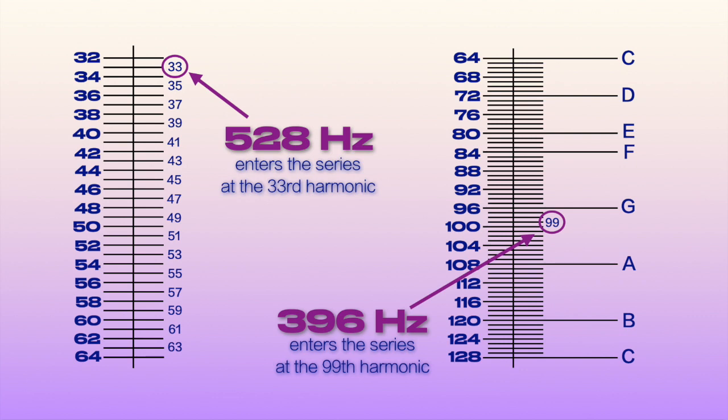The relationship between 528 and 396 is the same as harmonic 1 and harmonic 3, as 528 is a C, although it's sharp, and 396 is a G, also sharp.